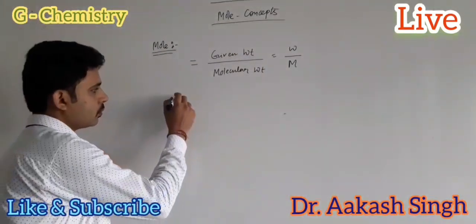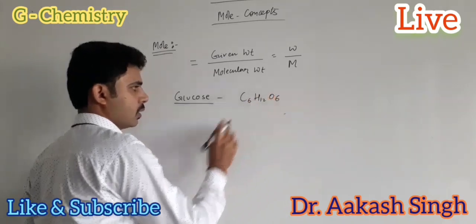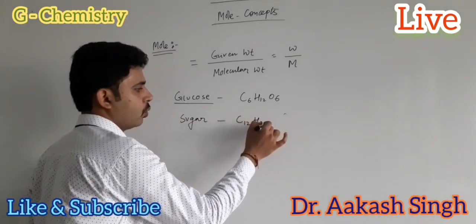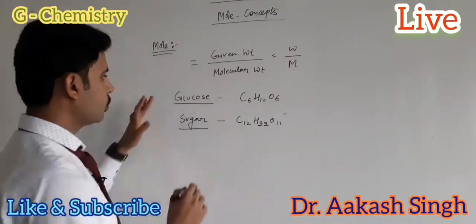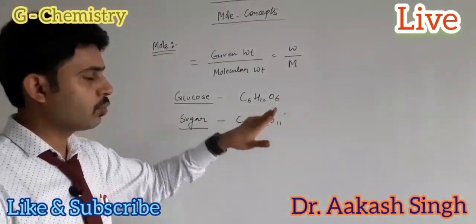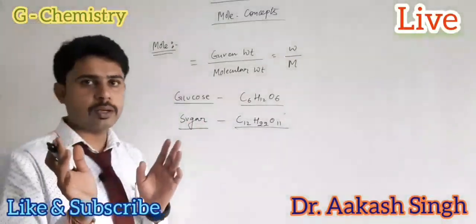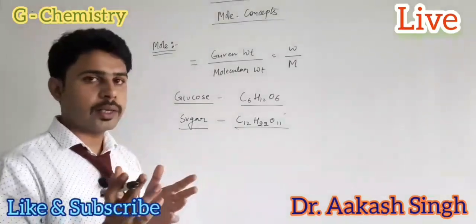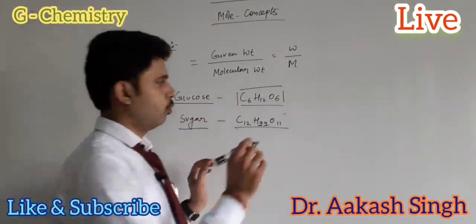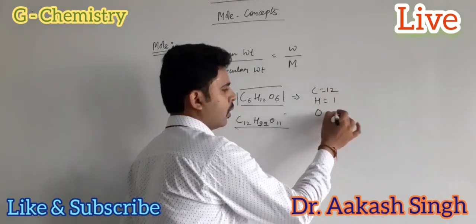If we consider glucose, the formula is C₆H₁₂O₆. If we consider sugar, the formula is C₁₂H₂₂O₁₁. These molecular formulas are always fixed, like H₂O for water, CO₂ for carbon dioxide, NH₃ for ammonia, and SO₂ for sulfur dioxide. The mass obtained from a chemical formula is known as molecular mass — for C that is 12, for H that is 1, and for O that is 16.